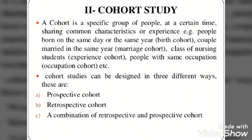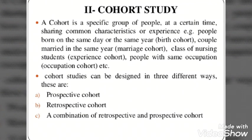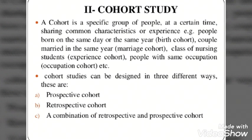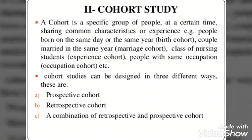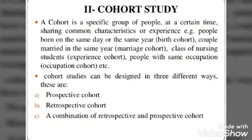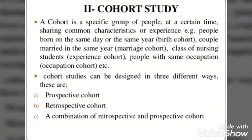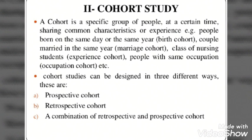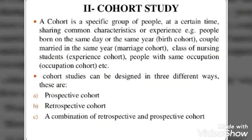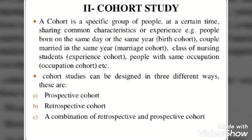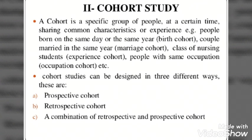The second type is the cohort study. A cohort is a specific group of people sharing common characteristics or experience at a certain time — for example, people born in the same year, couples married in the same year, a class of nursing students, or people with the same occupation. Cohort studies can be designed in three ways: prospective, retrospective, and a combination of both. In a cohort study, people with the same characteristics are grouped together — they already share similarities.